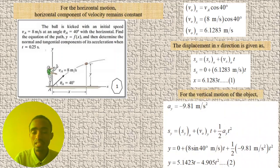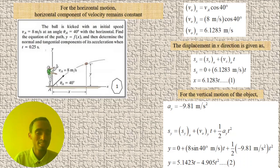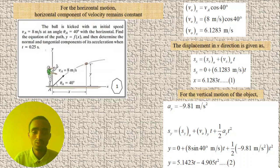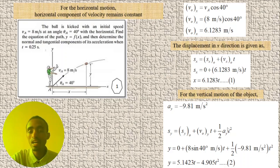For the vertical motion, the acceleration is constant because vertical projectile motion is an example of uniformly accelerated motion — the acceleration is due to gravity. Using the equation of uniformly accelerated motion, the vertical displacement is: y = s₀y + v₀y · t + (1/2) · a · t².